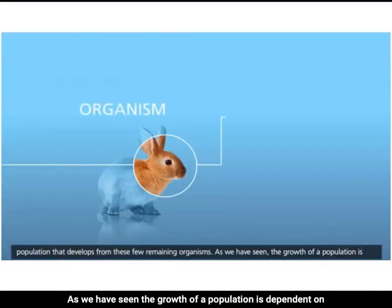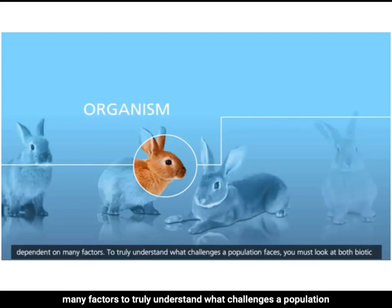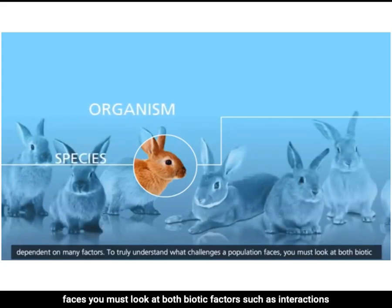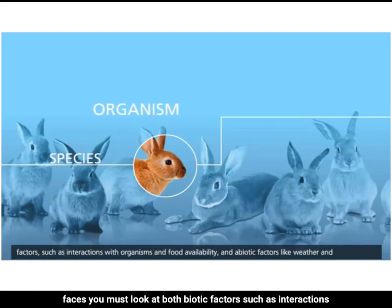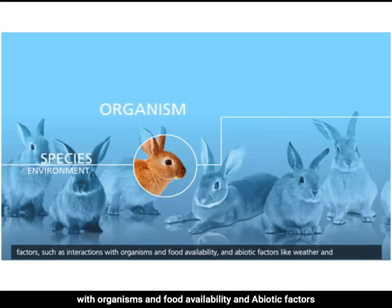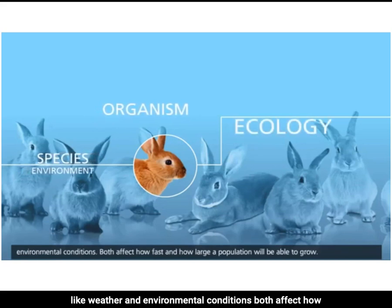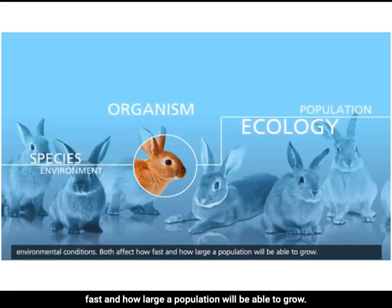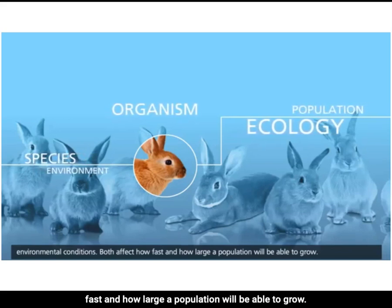As we have seen, the growth of a population is dependent on many factors. To truly understand what challenges a population faces, you must look at both biotic factors — such as interactions with organisms and food availability — and abiotic factors like weather and environmental conditions. Both affect how fast and how large a population will be able to grow.